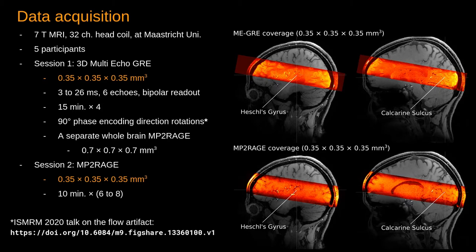In session two, we have acquired again at very high 0.35 mm isotropic resolution MP2RAGE images. You can see our high resolution anatomical coverage relative to the whole brain coverage on the right panel. In our acquisition, we targeted to acquire data from the calcarine sulcus and Heschl's gyrus at the same time.